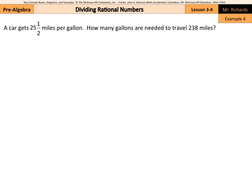A car gets 25 and 1/2 miles per gallon. How many gallons are needed to travel 238 miles? So to find how many gallons we need, we're going to take our number of miles and divide it by our miles per gallon. And that will get us our gallons.